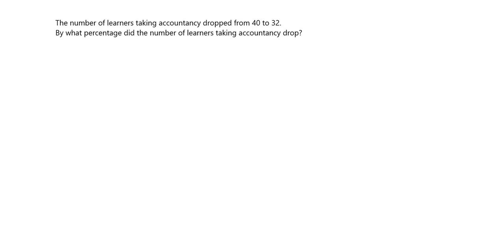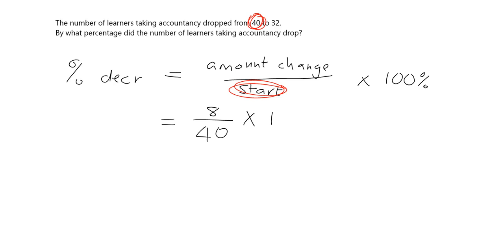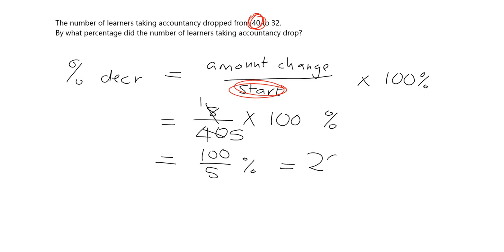Here's one to try for yourselves — pause and do it in your homework book. For percentage decrease, just like percentage increase, you look at how much things changed in relation to where you started, then turn it into a percentage. The number of learners in accountancy started at 40 and dropped to 32. The change is 40 minus 32, which is 8. Then 8 over 40 multiplied by 100: 8 into 8 is 1, 8 into 40 is 5, giving 100 over 5 — that is a 20 percent decrease.